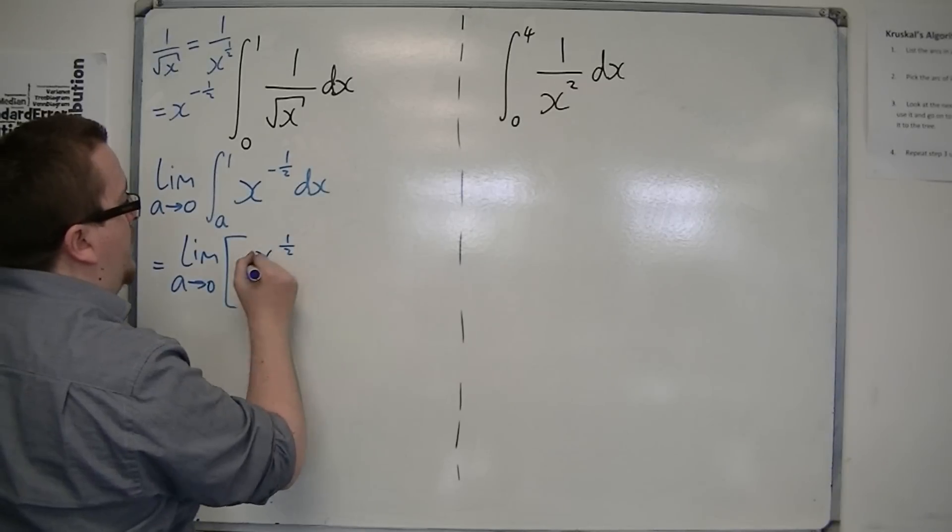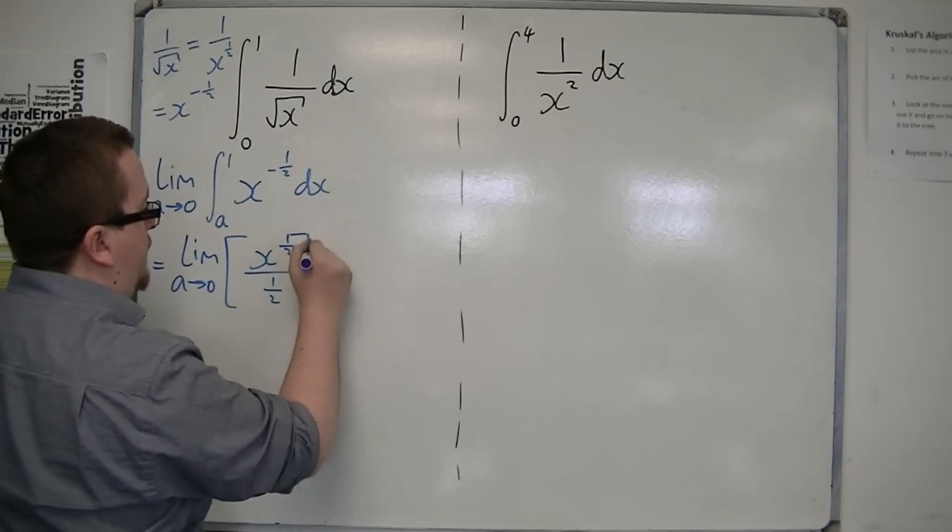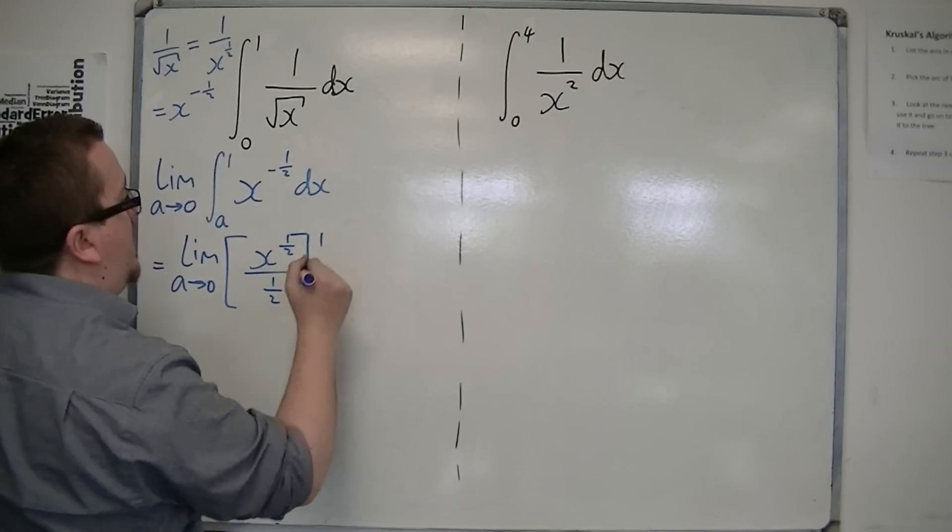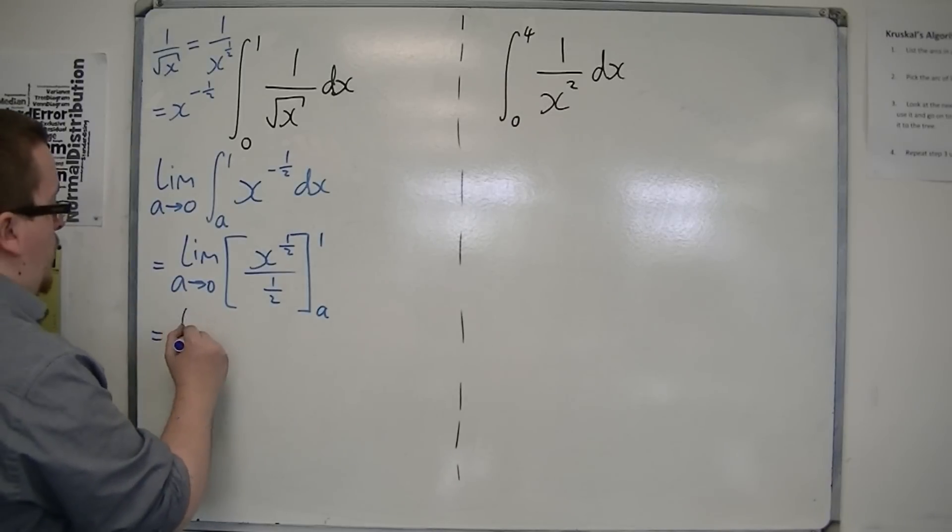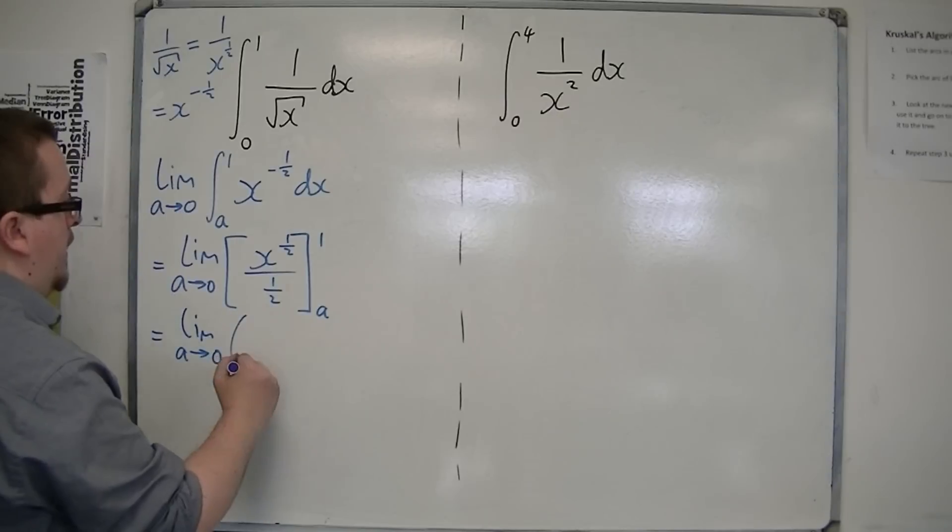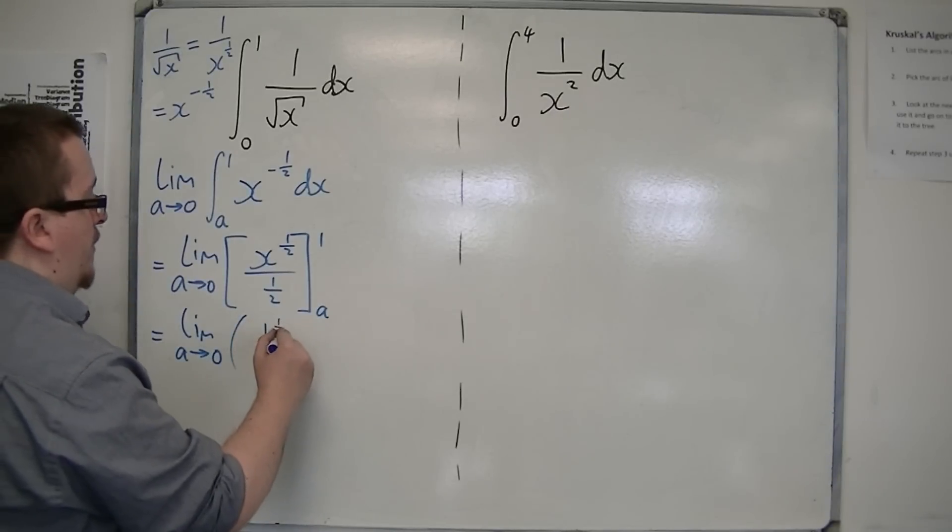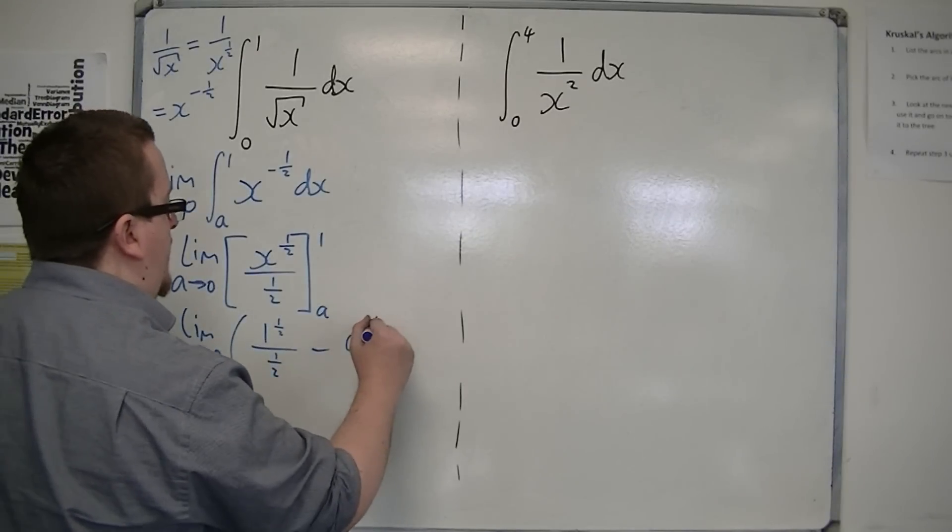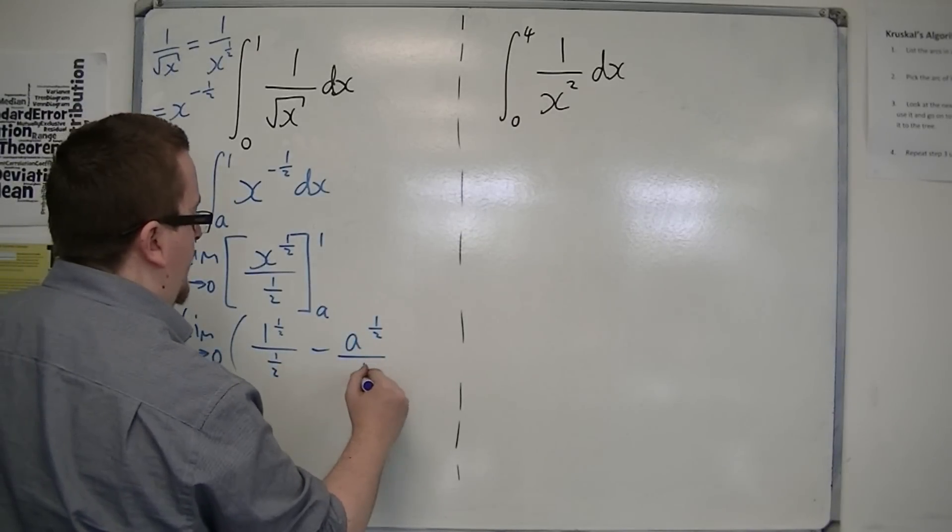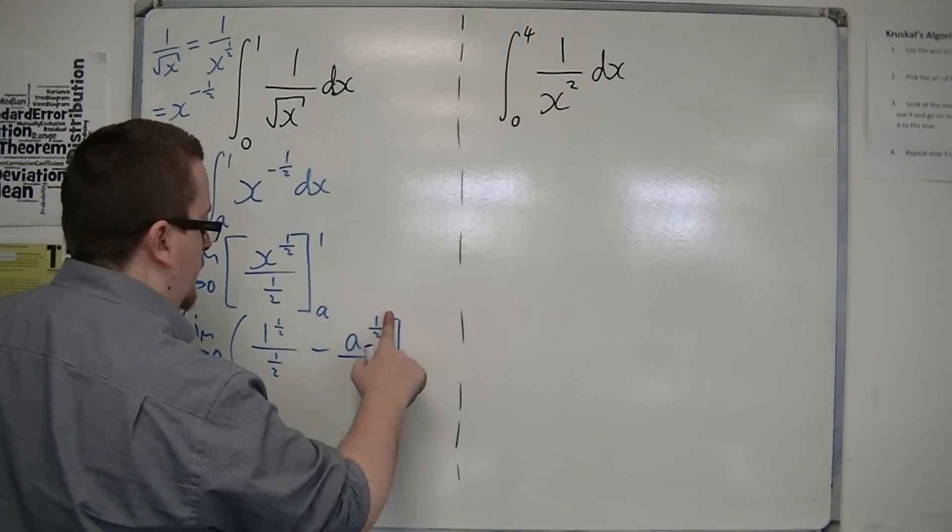Divide by the new power, a half. Evaluate it between a and 1. First of all, substitute in 1, but we've still got this limit there, remember. So 1 to the half divided by a half. Take away a to the half divided by a half.